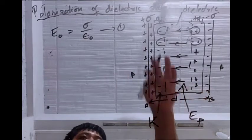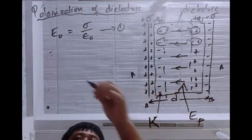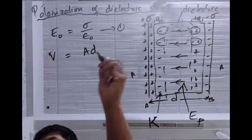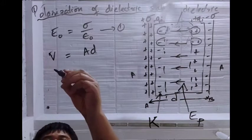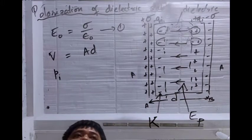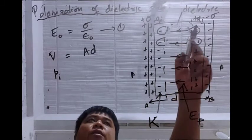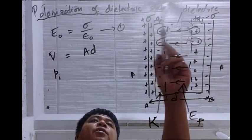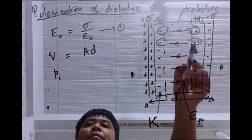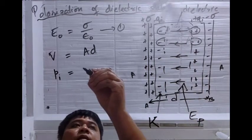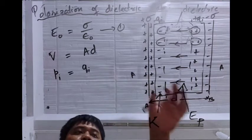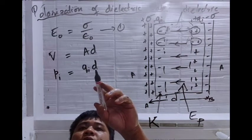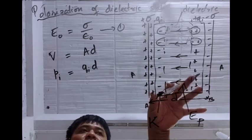The volume of the slab will be area times thickness. The volume of the slab is area A times thickness D. The dipole moment P_I due to the induced charges −QI and +QI — they are equal and opposite, so they form a dipole. The dipole moment will be QI times the distance of separation D.